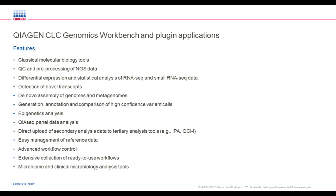You can generate, annotate, and compare high-confidence variant calls for biomedical purposes or for virus outbreak SNP calling. You can do epigenetic analysis on NGS data. If you happen to be a Qiagen panel customer, there's an extensive suite of tools in the biomedical genomics plugin. We also interface with tertiary analysis tools such as IPA (Ingenuity Pathway Analysis) and QCI (Qiagen Clinical Insights for Variant Interpretation).